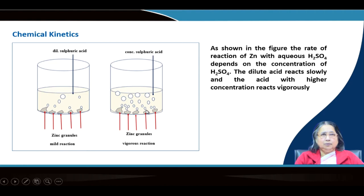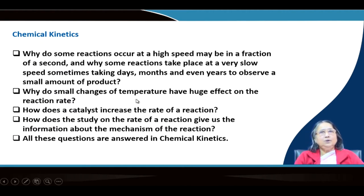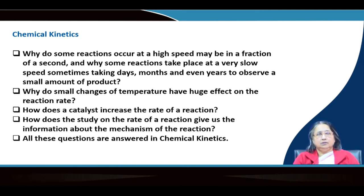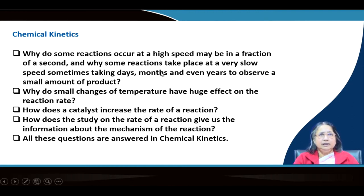This is the topic of chemical kinetics — which deals with why some reactions are slow and why some reactions are fast. Why do some reactions occur at a high speed? Some reactions happen in a fraction of a second, so quick that you cannot even monitor them with simple instruments. And why do some reactions take place at a very slow speed — sometimes days, months, or even years? Radioactive decay, for example, can have a half-life of millions of years — a very, very slow process.